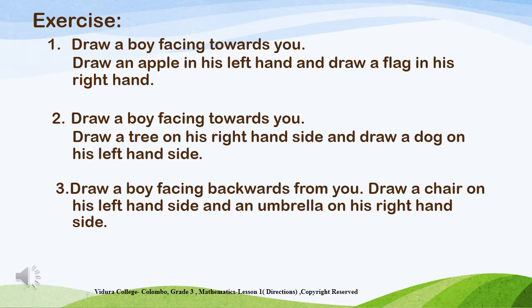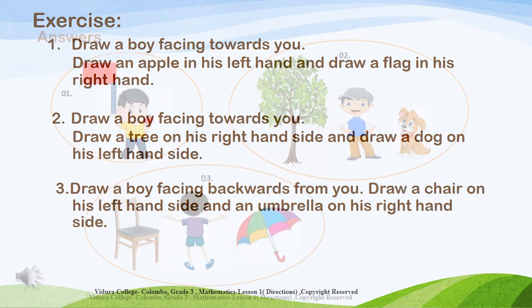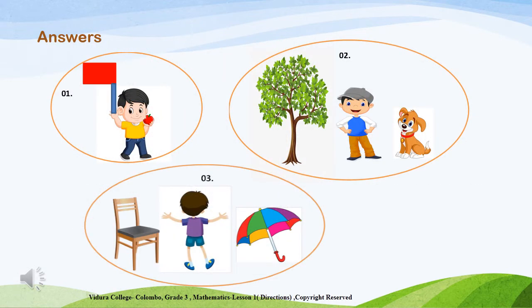Exercise 3: Draw a boy turning backwards you. Draw a chair on his left hand side and an umbrella on his right hand side. Now you can see the answers on the screen. You can check your answers with the teacher's answers.